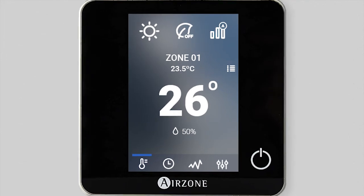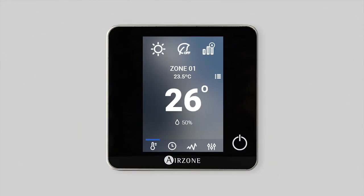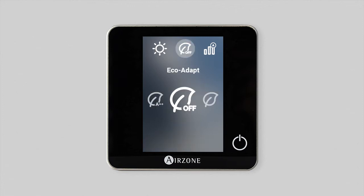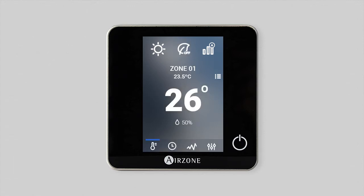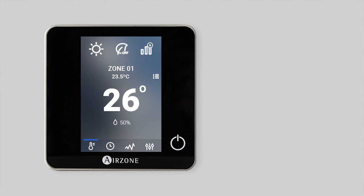The EcoAdapt function limits the temperatures in the zones in your system to more efficient values and, in the case of inverter units, reduces their energy consumption. The options from lower to greater efficiency are: off, manual, A, A+, or A++. Depending on the set point temperature, your Blueface thermostat displays a range of colors based on the system's degree of efficiency.